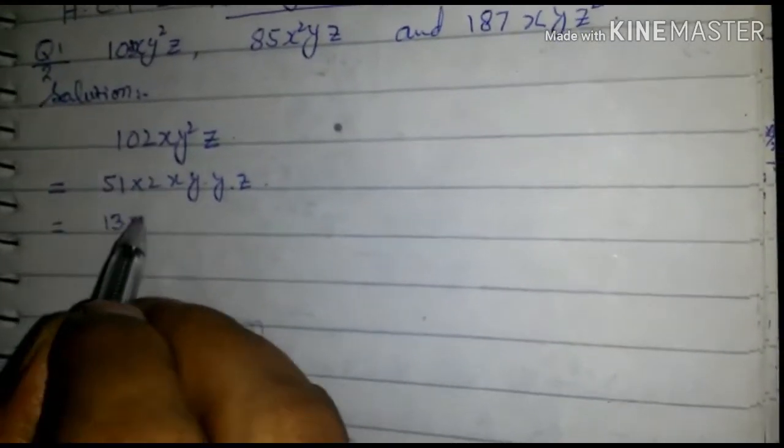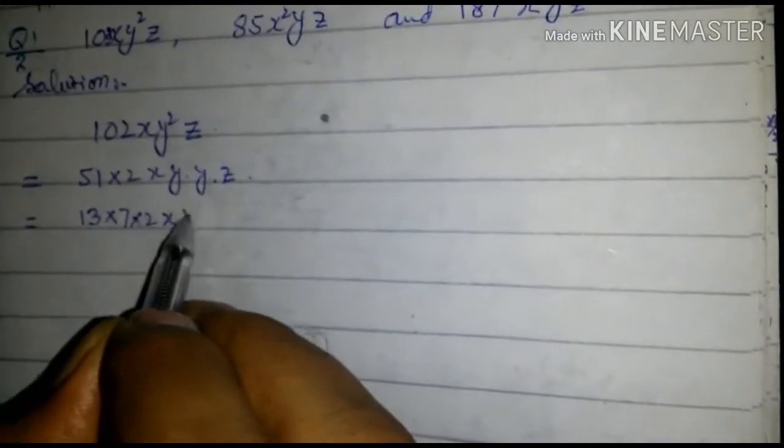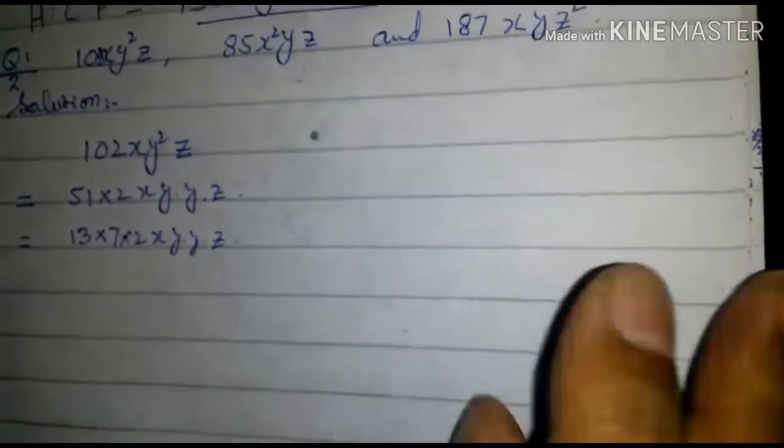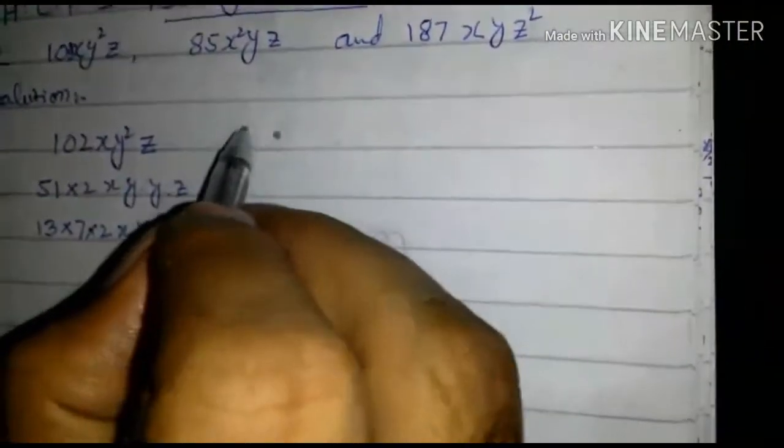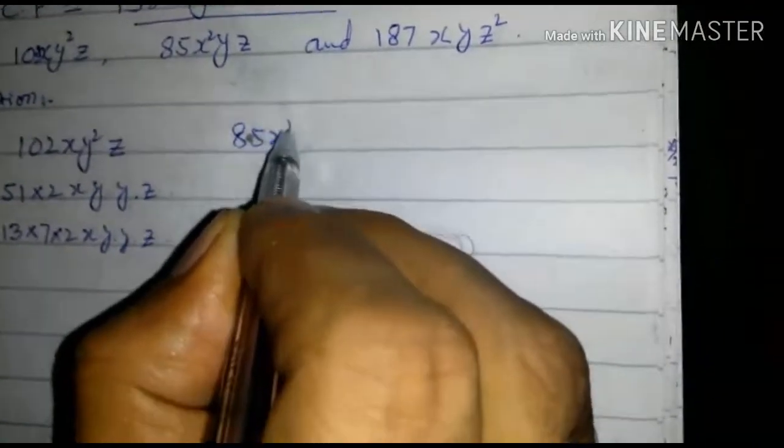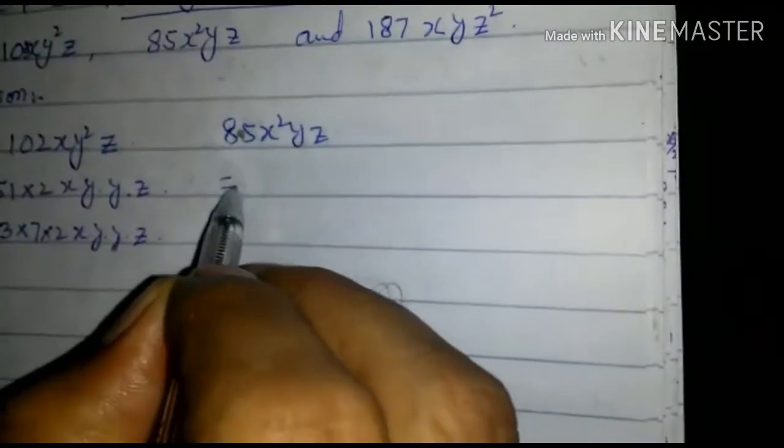This equals 17 into 3 into 2 into x into y into y into z. Now consider second expression 85x²yz. This is equal to...